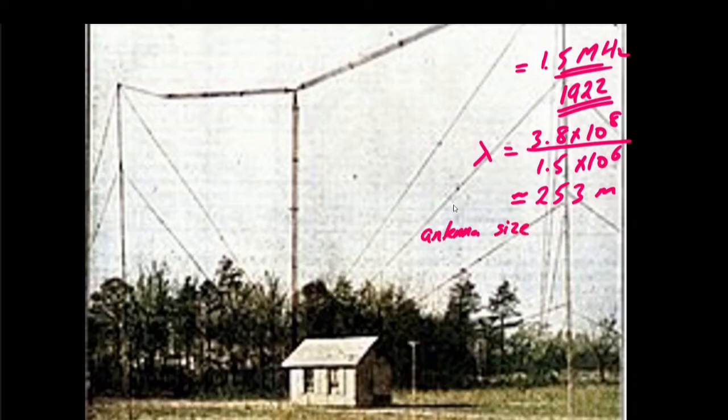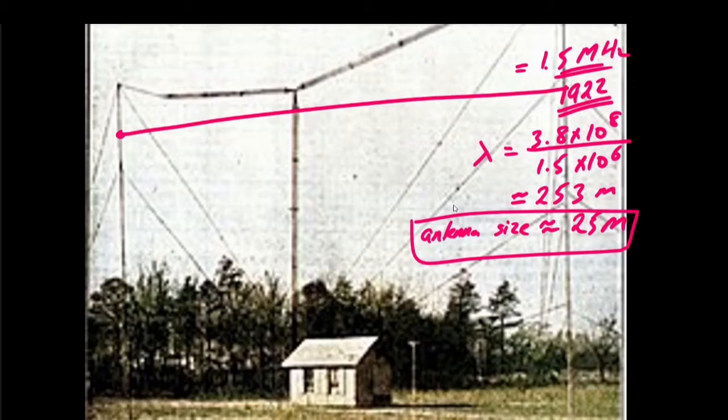At 1.5 megahertz, we have a wavelength which is simply 3.8 into 10 raise power 8, that is c, meters per second, divided by 1.5 into 10 power 6. This is equivalent to approximately 253 meters. And the antenna size is roughly 25 meters. From this calculation, we in fact have this dimension, which is roughly 24 to 25 meters.